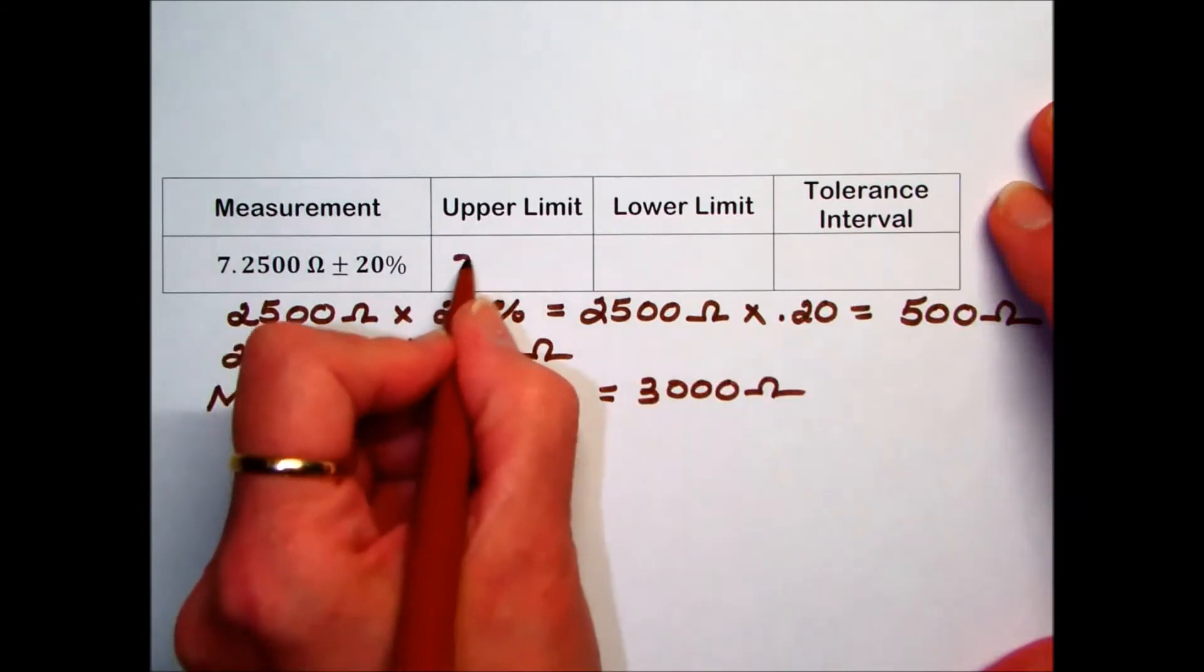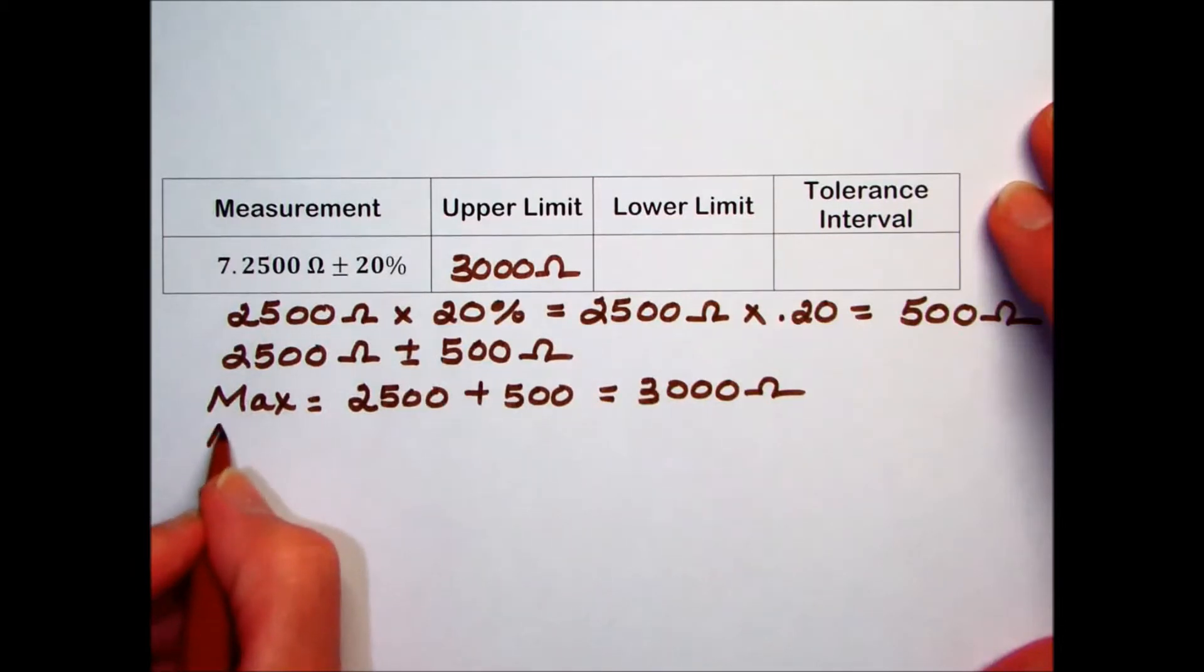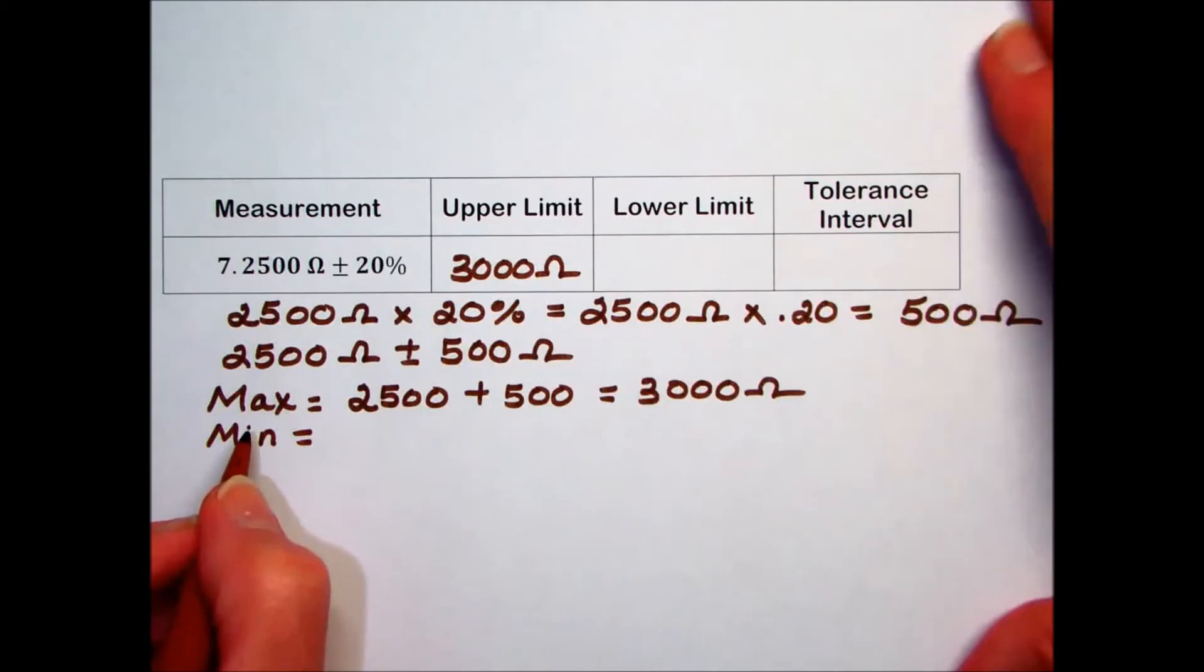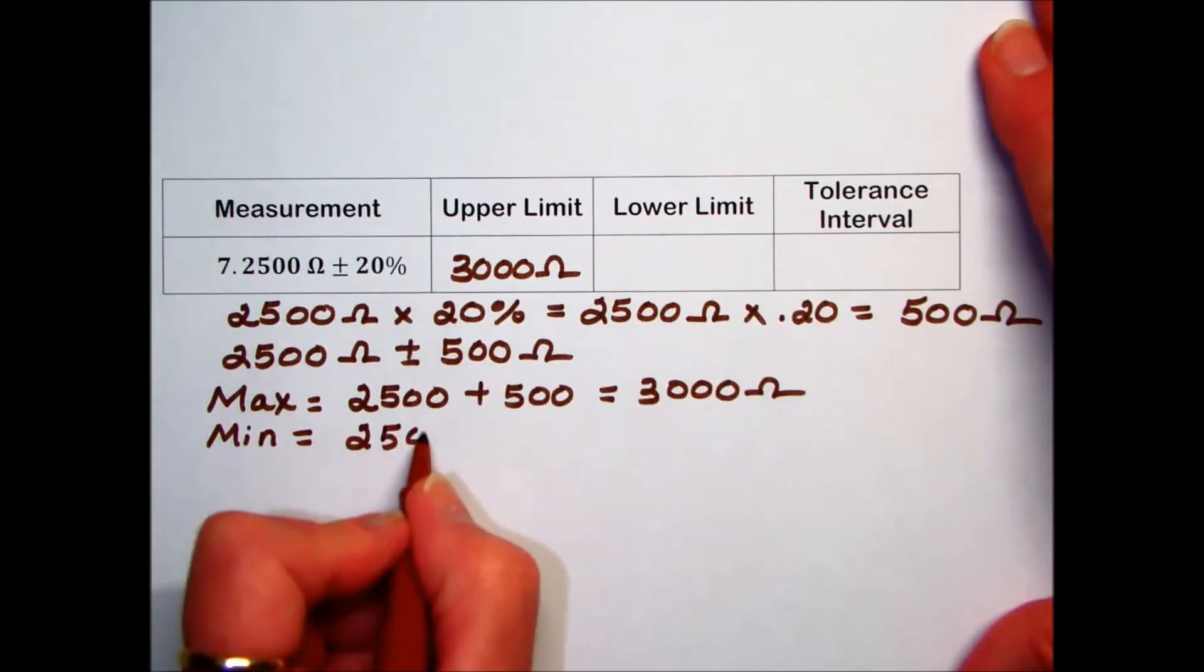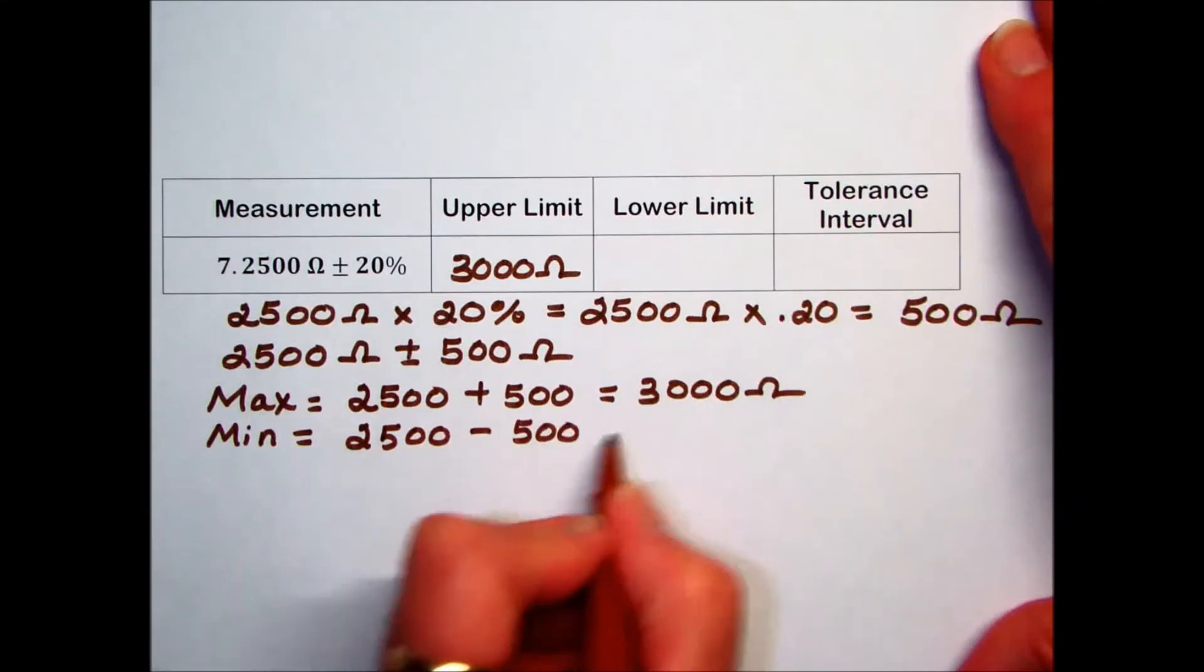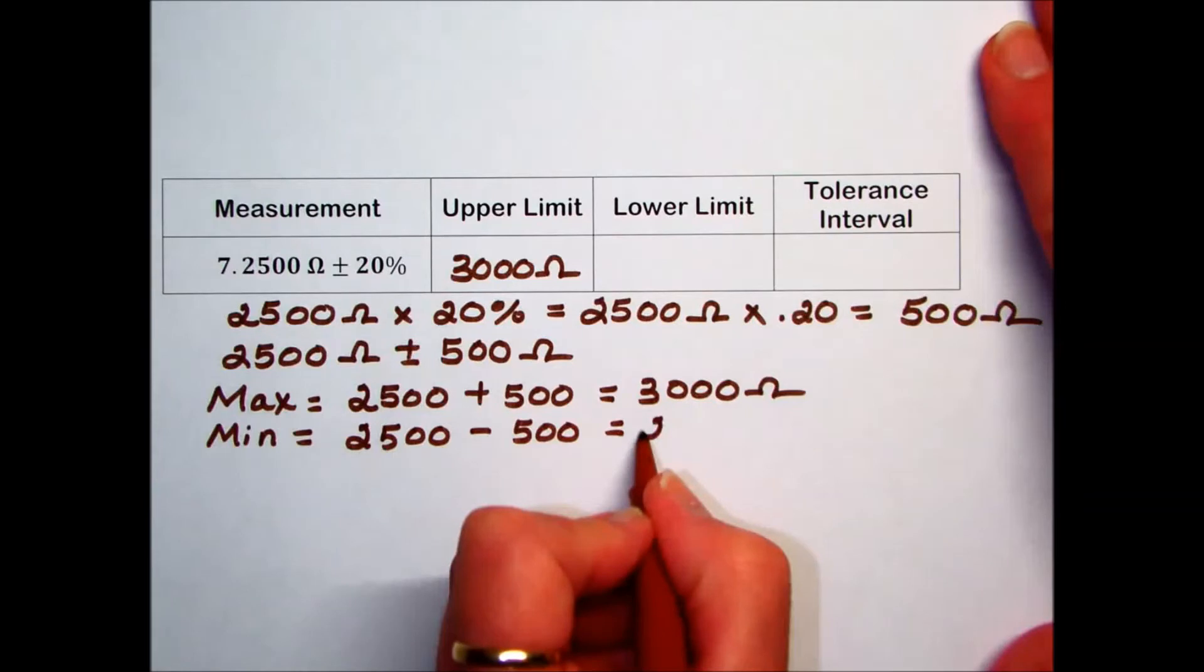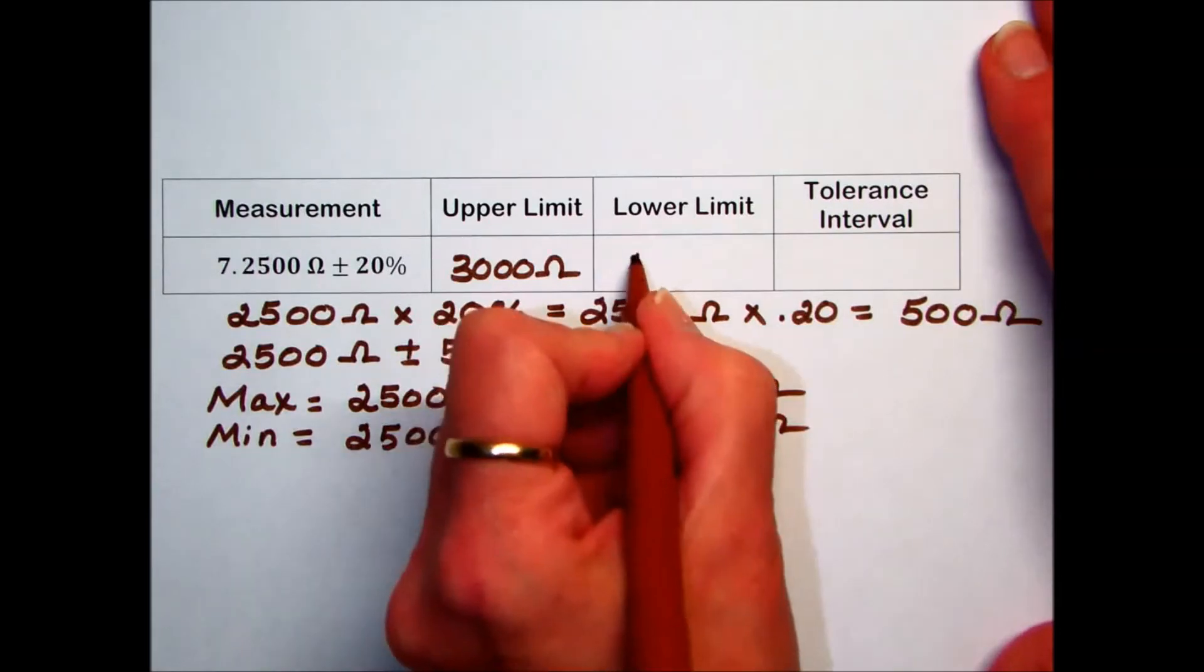For the lower limit, sometimes referred to as the minimum value, we will take the standard measurement 2500 and subtract the tolerance of 500 ohms, giving us a value of 2000 ohms.